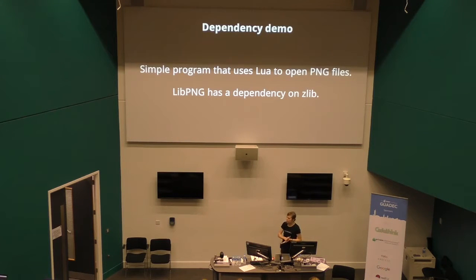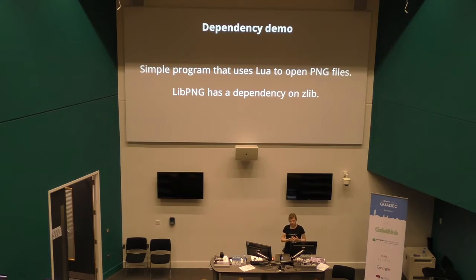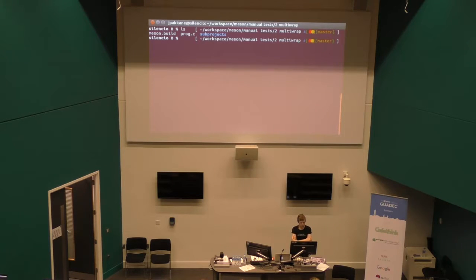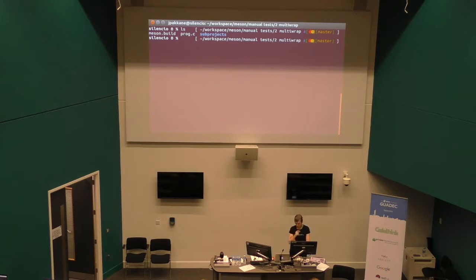Let's look at the demo. I wrote a simple application — you can find the actual code inside the Meson repository. It's a simple program that compiles and links with Lua, and it's a script that opens PNG files. So it depends on libpng as well, and libpng depends on zlib for the actual compression. There's a build definition file, a C file which does the actual work, and a subprojects folder which we'll look into in a bit.